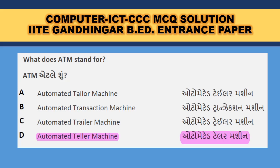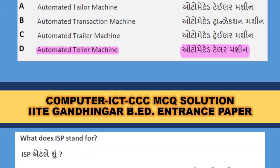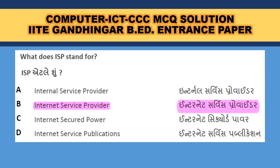What does ATM stand for? ATM means Automated Teller Machine. What does ISP stand for? ISP is Internet Service Provider — those who provide internet connectivity to us. They are internet service providers like BSNL, Jio, and all the cellular companies.